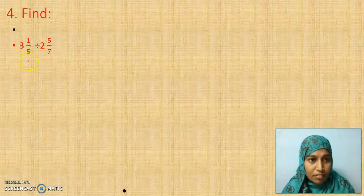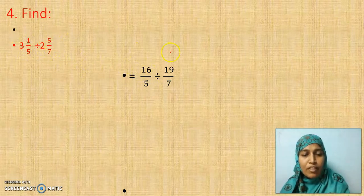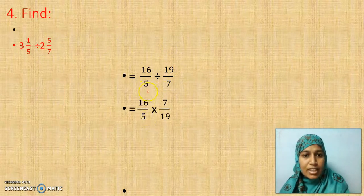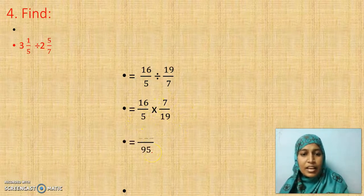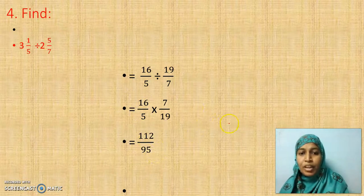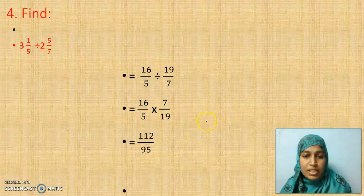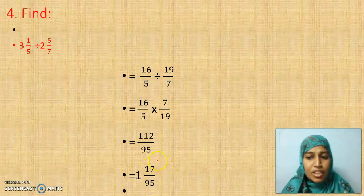Now the fourth question: dividing a fraction by a fraction — same rule, nothing different. Converting the first mixed fraction: 5 threes are 15, plus 1 is 16 by 5. The division symbol stays, and the second mixed fraction: 7 twos are 14, plus 5 is 19 by 7. So 16 by 5 is written as it is, division changes to multiplication, and 19 by 7 is reciprocated to 7 by 19. There is no possibility of cancellation, so multiplying: 16 times 7 is 112, and 5 times 19 is 95. Converting to mixed fraction: 112 divided by 95 gives 1 remainder 17, so the answer is 1 and 17 by 95.